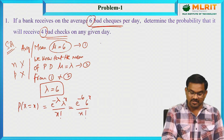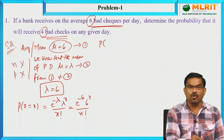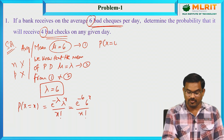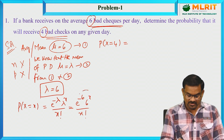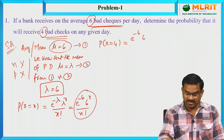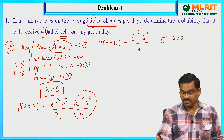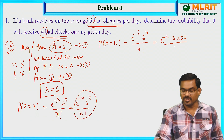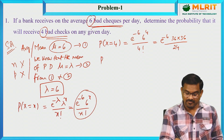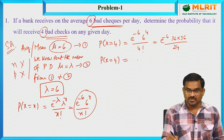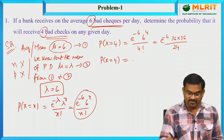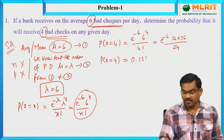It is required to find the probability of receiving 4 bad checks, so x = 4. Using the formula: e^(−6) · 6^4 / 4! = e^(−6) · 1296 / 24. After calculating, the final answer is 0.1339.